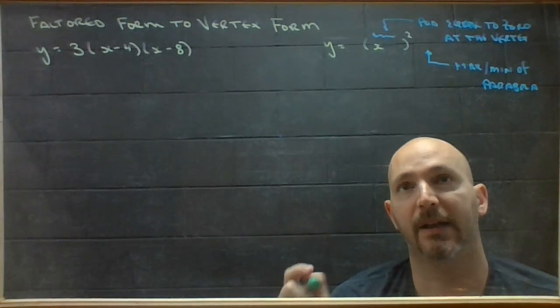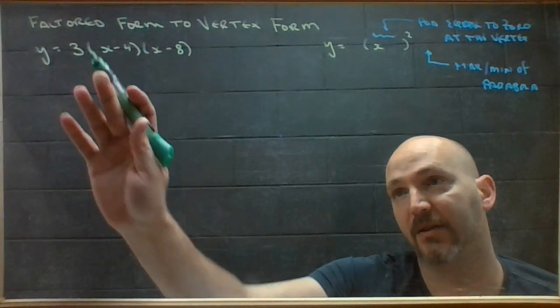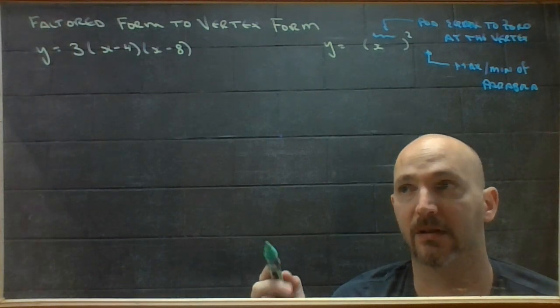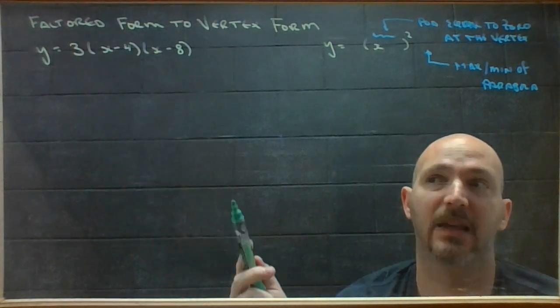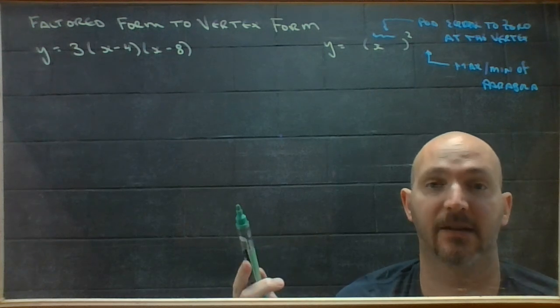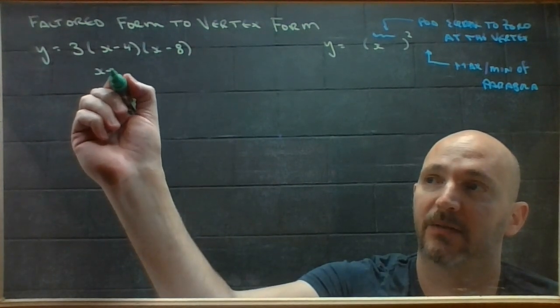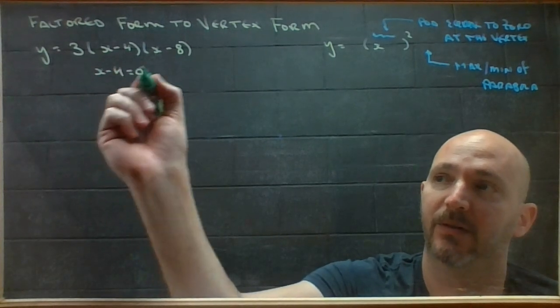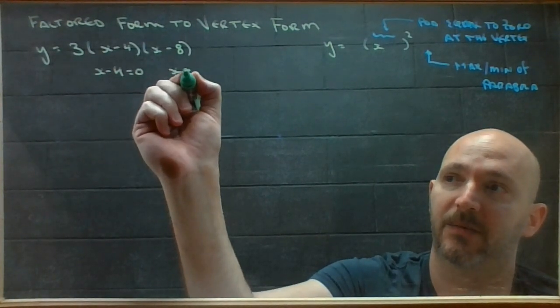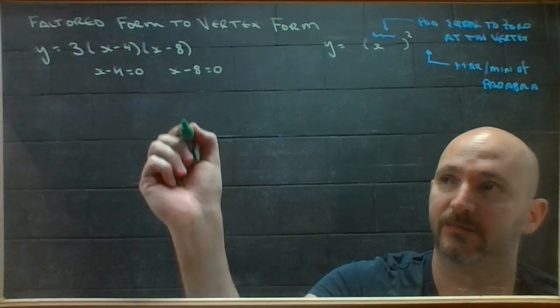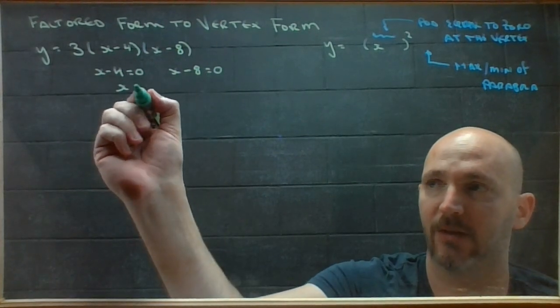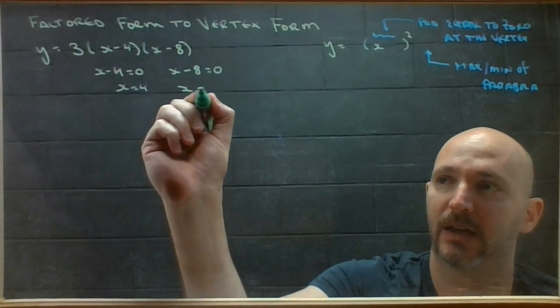So I need to know about the vertex based on this particular function. And this form isn't giving me the vertex, it's giving me the x-intercepts. So I'm going to have an x-intercept when this equals zero, and I'm going to have an x-intercept when this equals zero. So that would be at 4 and at 8.